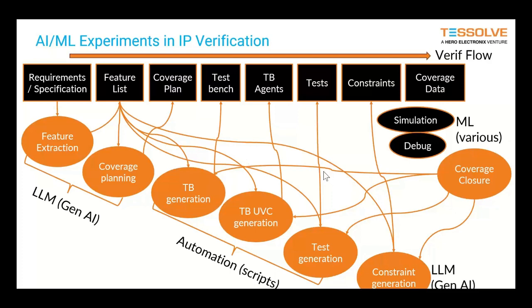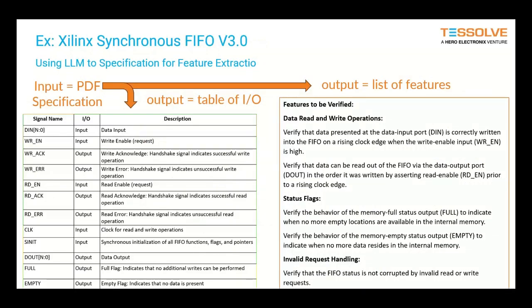I'm going to go through this now in the next ten minutes or so. As a proof of concept — and we've applied this to more complex designs than just a FIFO — we took a synchronous FIFO version 3.0, an industry-available specification. We took the PDF and used a large language model to do feature extraction on it. Just by feeding the PDF into a large language model, we got a list of all the I/O, whether it's input or output, the signal name, and the description.